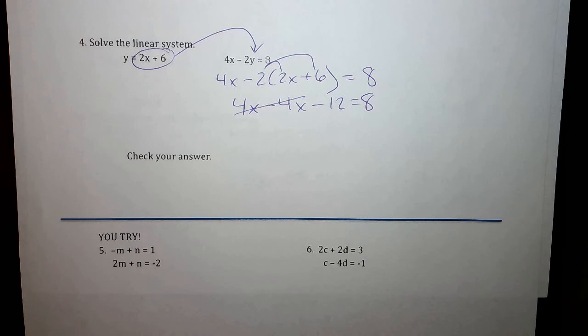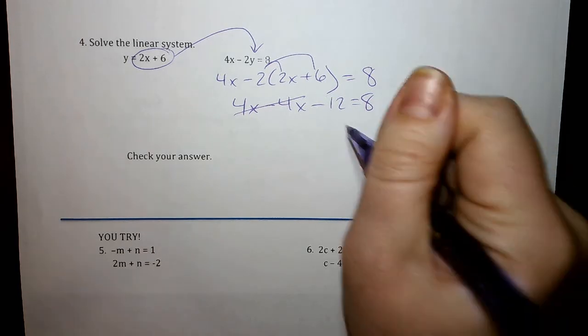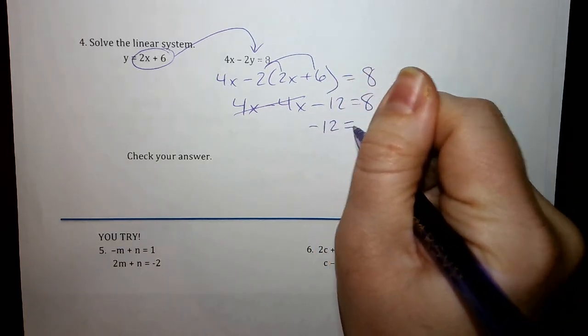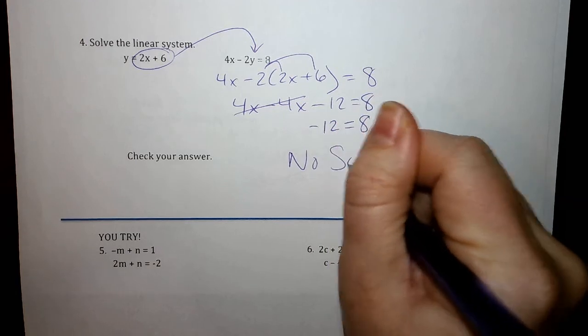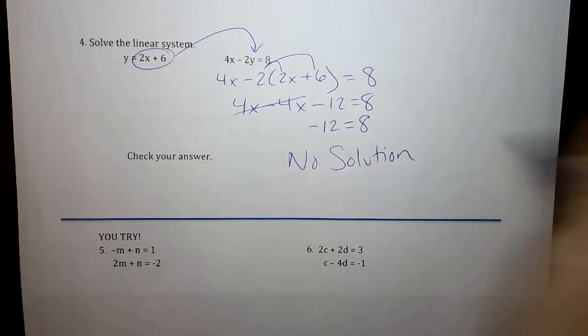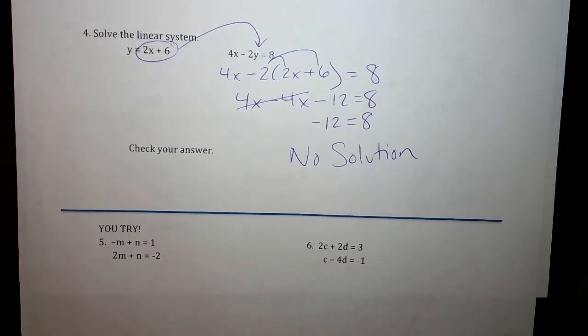4x minus 4x equals 0x so those go away. I end up now with two numbers that do not equal each other. That's your no solution case. There's nothing that I could plug in for x here to ever make negative 12 equal to 8.